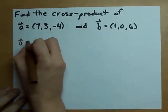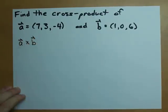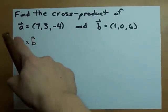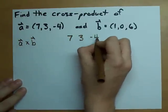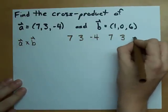If you're asked to find, in this case, A cross B, here's what I want you to do. Take A, the first vector, and write it out horizontally, then write it out horizontally again.